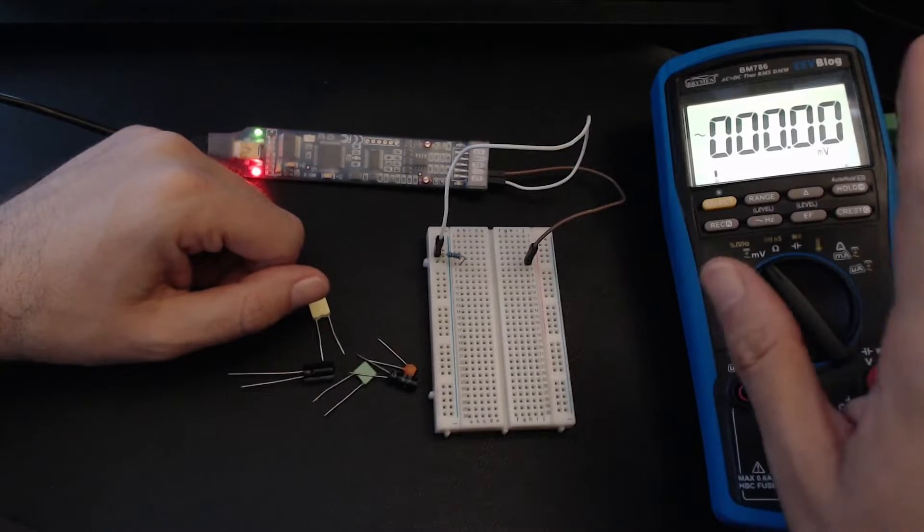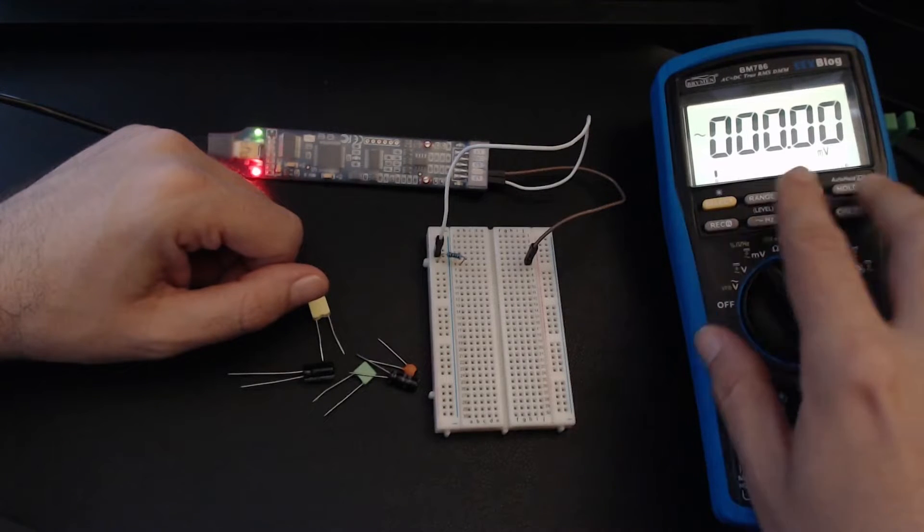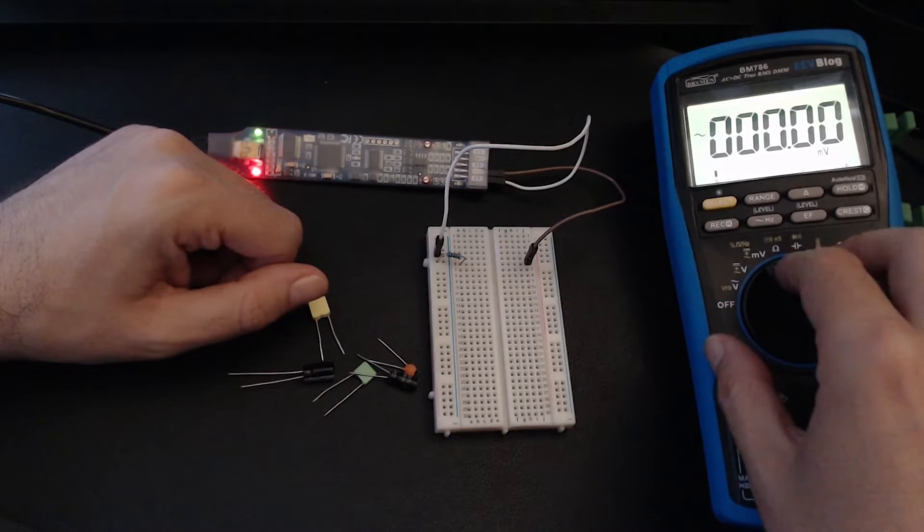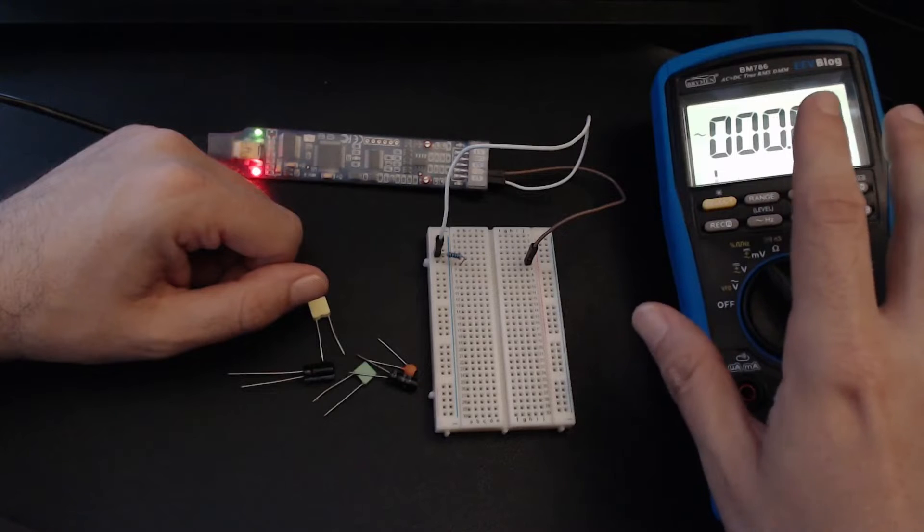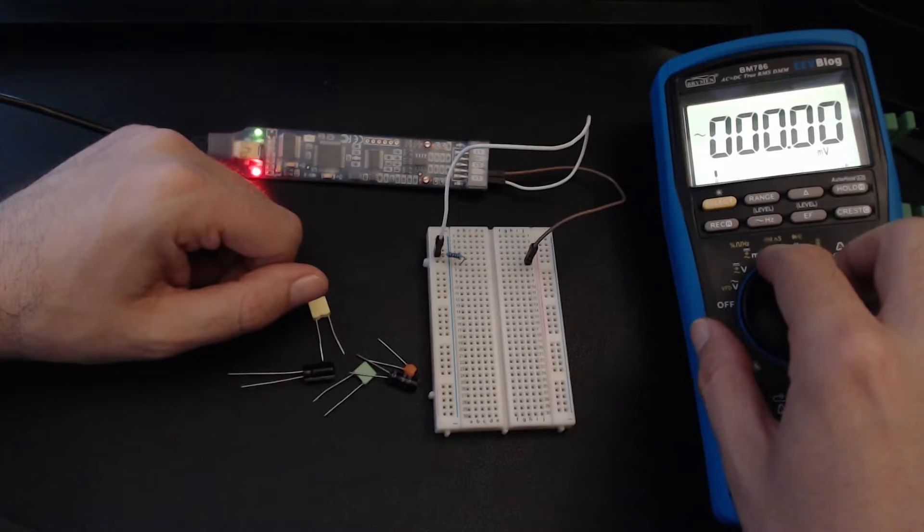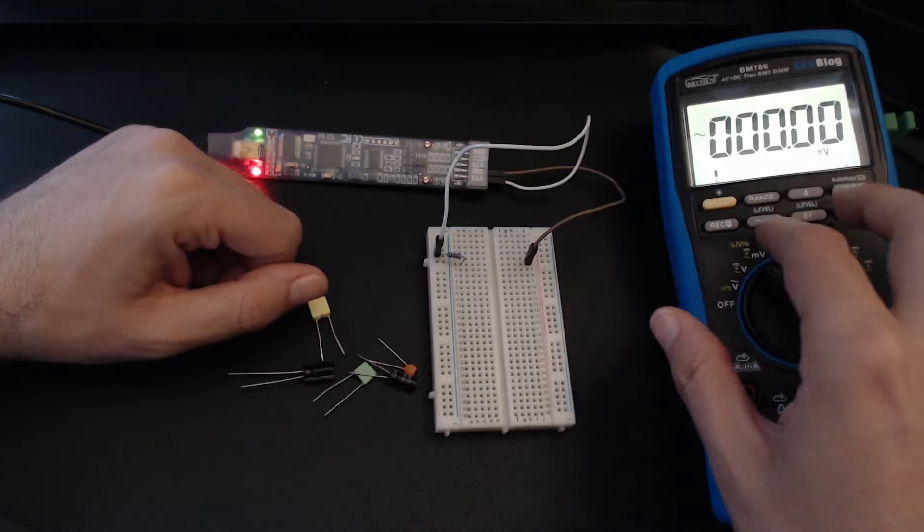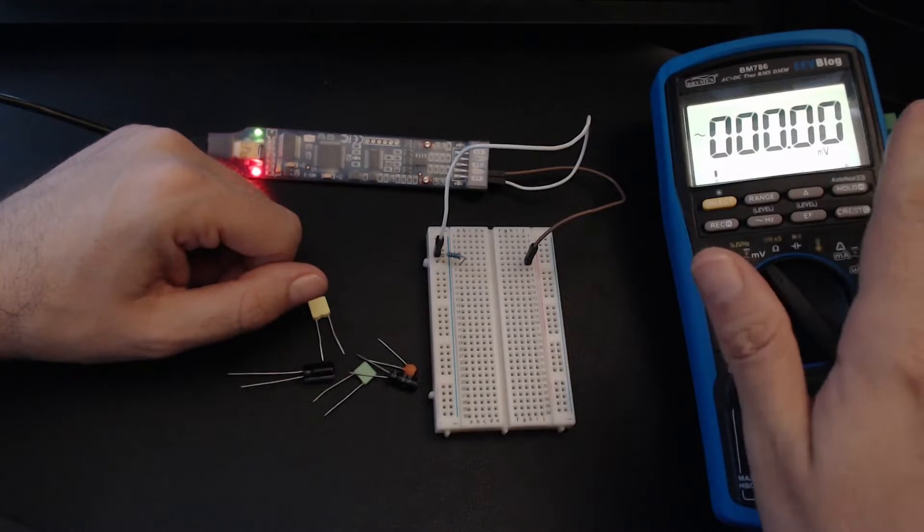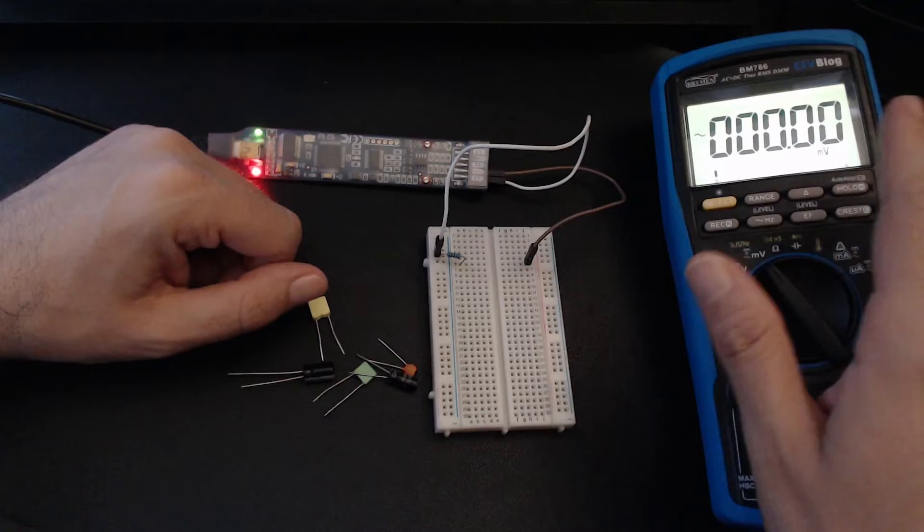On the multimeter front, I have a true RMS digital multimeter that can get pretty accurate readings in the millivolts level up to 7 kilohertz AC. You'll need a multimeter that can do accurate readings in the millivolts level in AC up to 7-10 kilohertz. It doesn't have to be a true RMS multimeter, but it improves the accuracy of this method drastically.